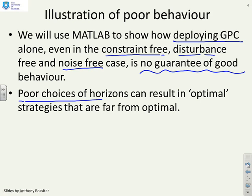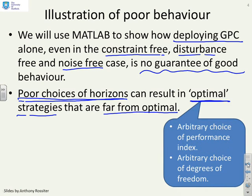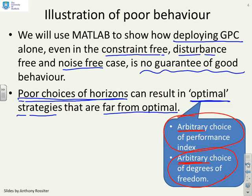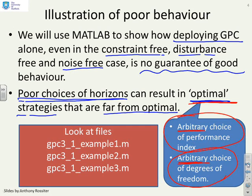The key thing is that poor choices of horizons can result in what are supposedly optimal strategies — because they come from an optimisation — that in fact are far from optimal. What you've done is made an arbitrary choice of a performance index and an arbitrary choice of degrees of freedom. Optimising an arbitrary performance doesn't necessarily mean you will be optimal. Some files are available on the Google sites server if you want to look at how this works.